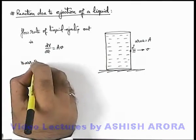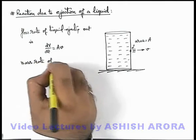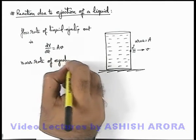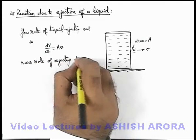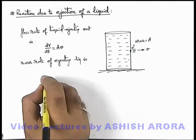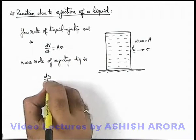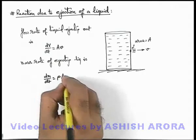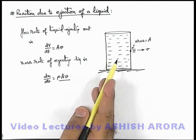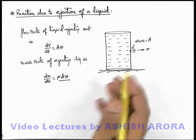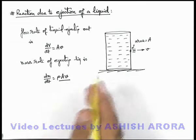If we find out the mass rate of ejecting liquid, this mass rate dm/dt can be simply written as ρAv, if ρ is the density of the liquid. Then ρ multiplied by the volume flow rate is the mass rate of ejection.